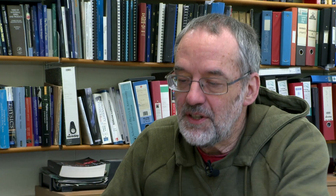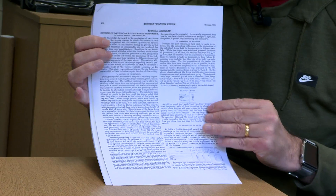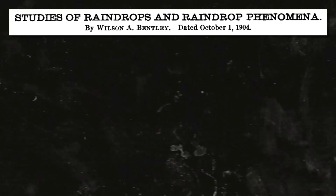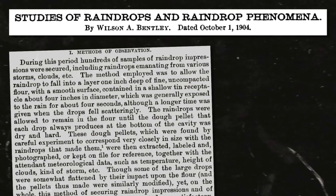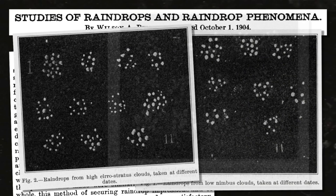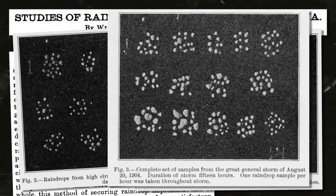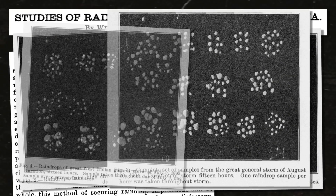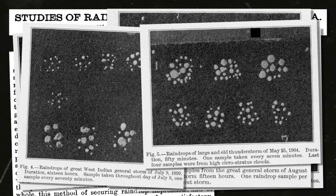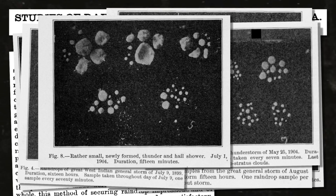I actually have his paper here. He explains his experiments, but he actually has photographs of some of his experiments showing what the raindrops look like. You can see a range of different sizes - some little drops, some big drops. He also found that sometimes the size distribution was more uniform, sometimes there were bigger drops, sometimes there were smaller drops.